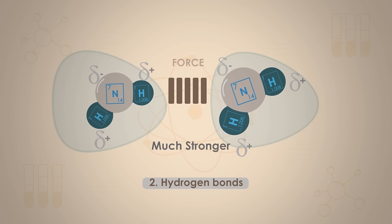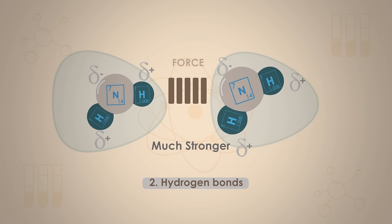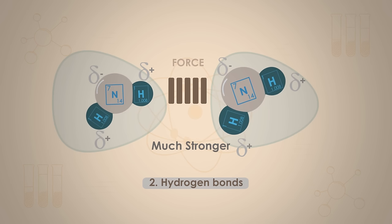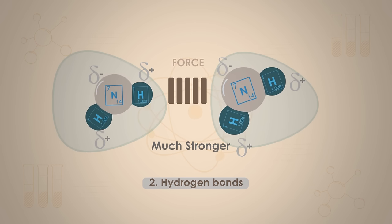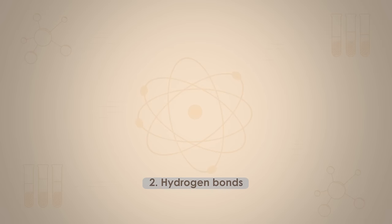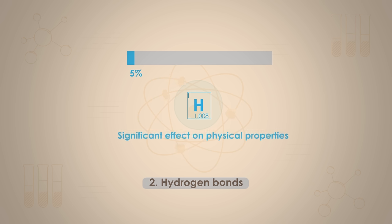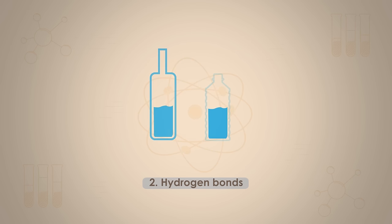A hydrogen bond is the attraction between the H δ+ of one molecule and the δ− on the lone pair of a fluorine, oxygen, or nitrogen atom of a neighbouring molecule. Even though a hydrogen bond has only about 5% the strength of a covalent bond, it does have a significant effect on the physical properties of compounds. For example, were it not for hydrogen bonds, both water and alcohol would be gases at room temperature and pressure.